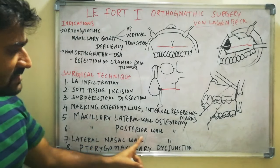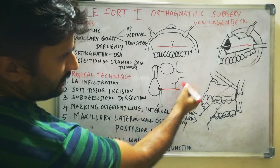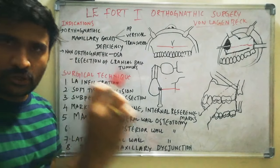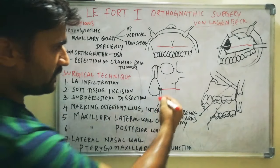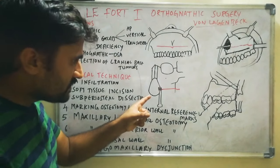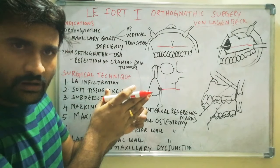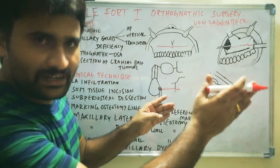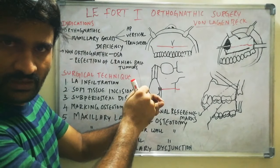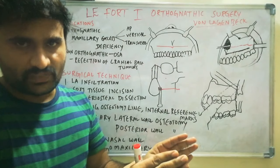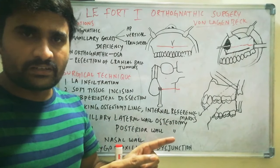Next, prepare the lateral nasal wall osteotomy. With an osteotome placed at the lateral nasal wall, tap it to a depth of 25 to 30 mm only — not more than that. If you go deeper, there are chances of injuring the descending palatine artery.